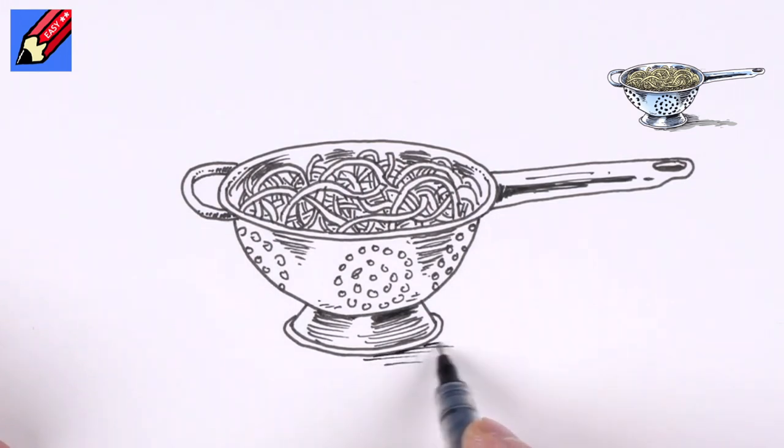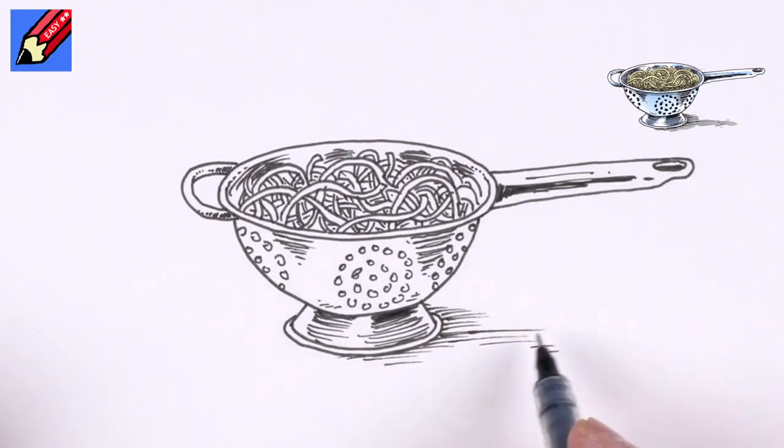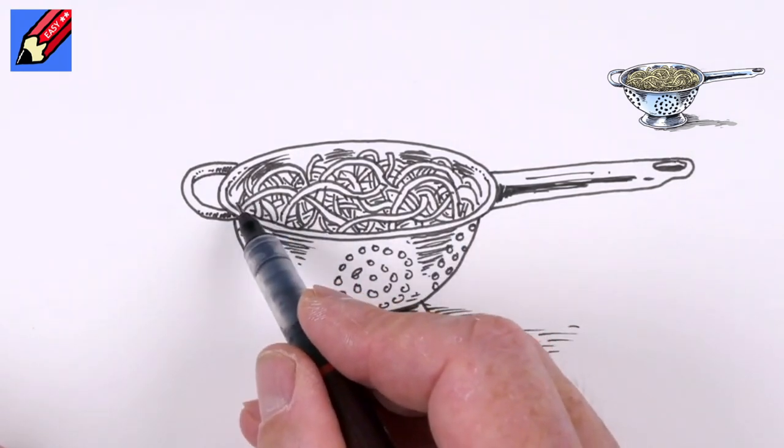And then we're going to want some shading on the ground as well, just to kind of place it on the table. It will be like that. And then maybe there'll be some bit of the handle casting shadow too. Now this looks a bit of a mess here, all this pasta.